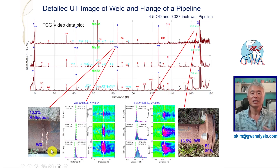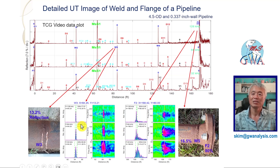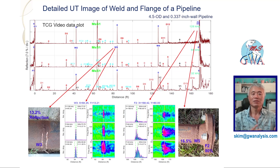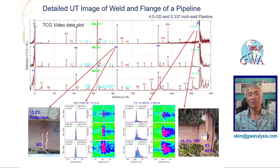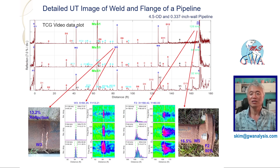This is a detailed UT image of one weld and one flange on a pipeline. The detailed UT image of the weld proves that no defect exists near the weld location. The flange signal shows a trailing signal due to the complex geometry of the flange. The visualization with detailed UT images of geometry features will be used to monitor defect initiation and growth near the geometry feature if the pipeline is inspected again in the future and the detailed images are compared to each other.